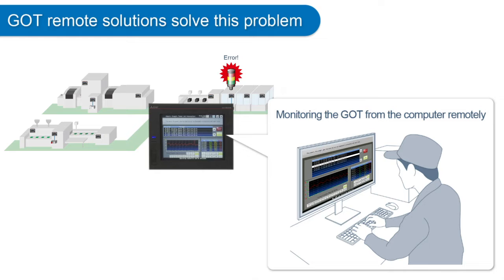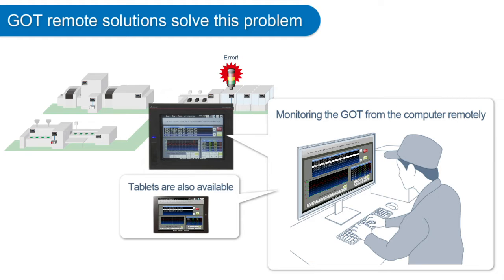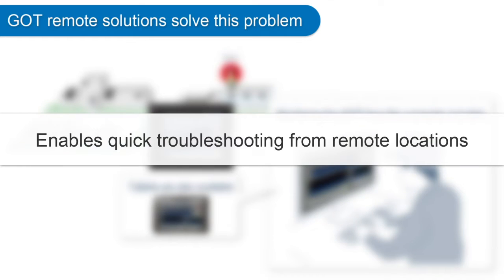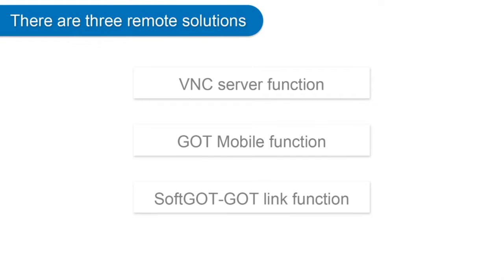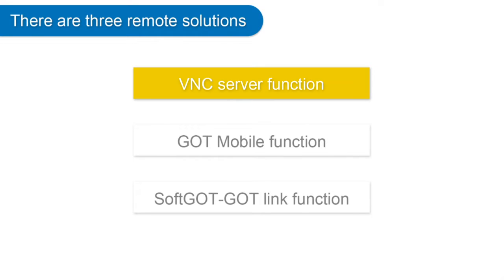Even if operators do not go on site, access to the G.O.T. from a computer or tablet can be realized. This enables easier checking of parameters and errors that can occur remotely. Three remote solutions for the G.O.T. exist. This video explains the VNC server functionality.